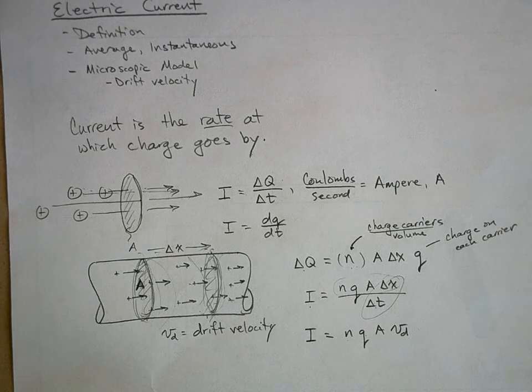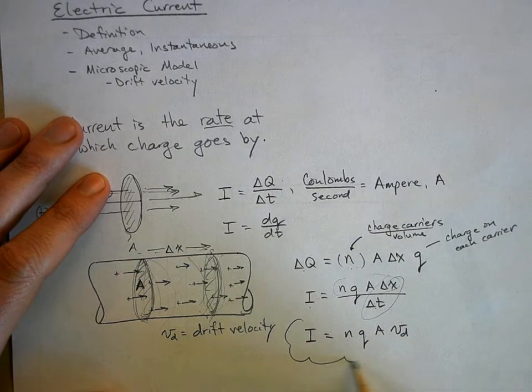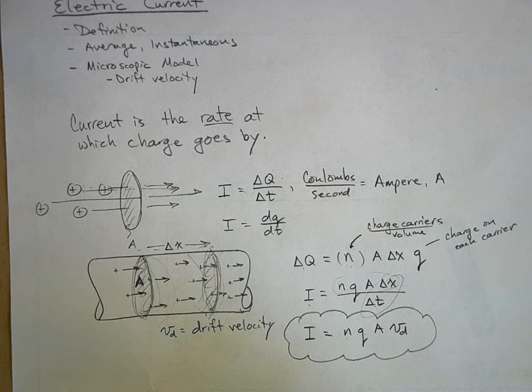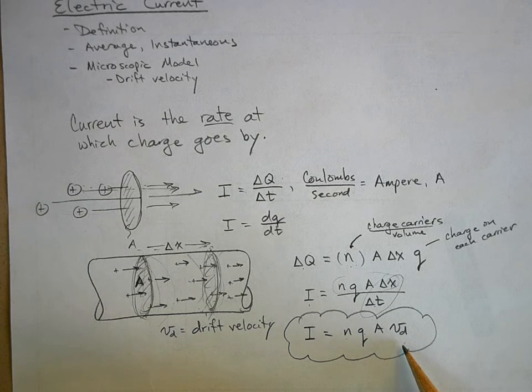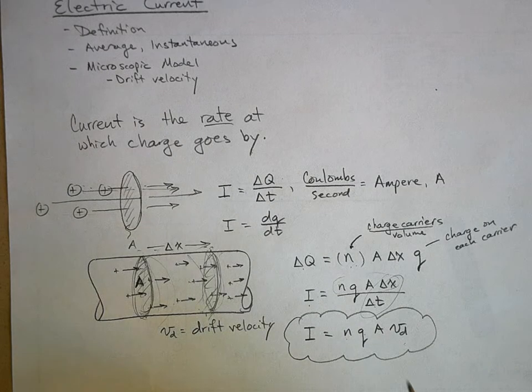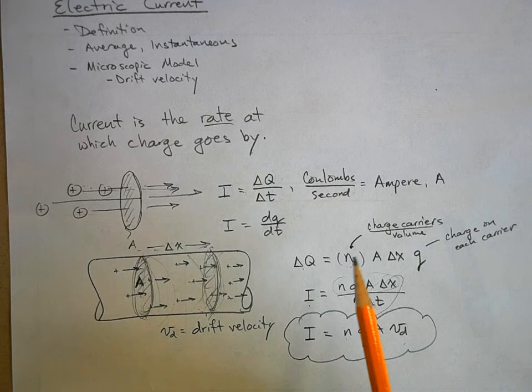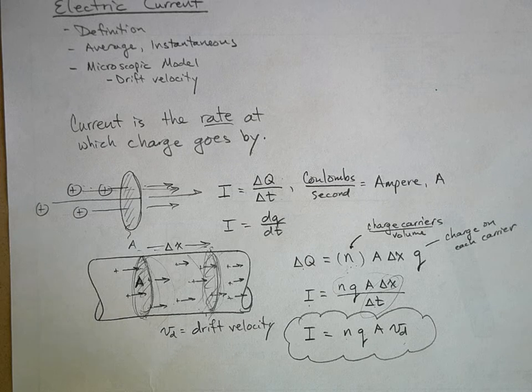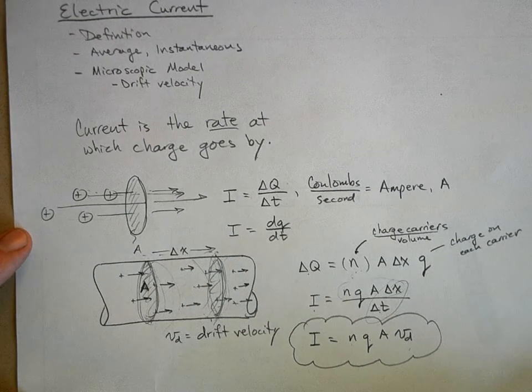You can use this equation to solve problems. We'll work an example problem here in a minute. This drift velocity turns out to be pretty slow when you look at different applications. By the way, the hardest part of doing this is figuring out n, the number of charge carriers per unit volume, because you have to remember all that stuff from chemistry, like moles and grams per mole and how many charge carriers there are per atom and all that. So I'll show you a problem where you have to do that here in a minute, but this is current.